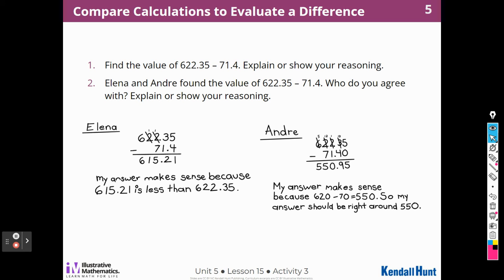Last activity before our cool down. Find the value of 622 and 35 hundredths minus 71 and 4 tenths. Explain or show your reasoning. Here's how Alina did it. And here's how Andre did it. Here again, Alina did not line up her decimal places, did she?